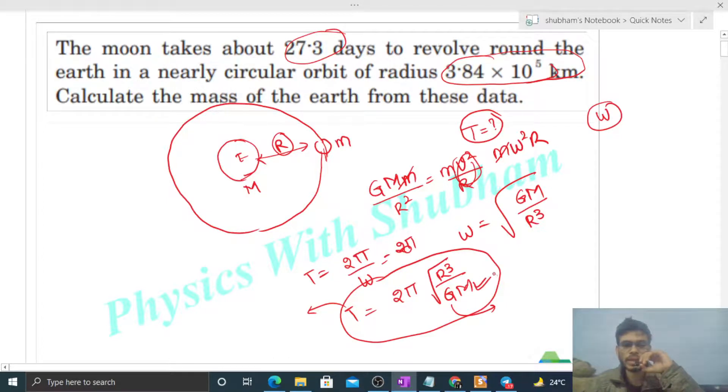From here, T² = 4π²R³/(GM). So bring mass to the other side and T² to the denominator: M = 4π²R³/(GT²).